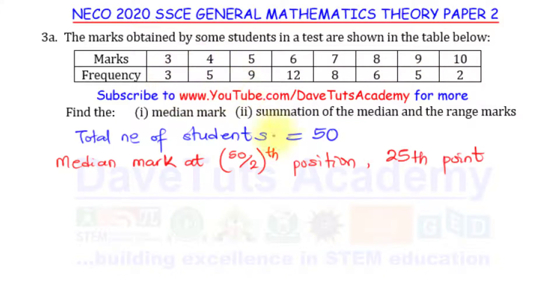Looking at these numbers, we want to add cumulatively so we'll get to 25. We can see 3 + 5 = 8, 8 + 9 = 17, so here we have 17. 17 + 12 = 29. So the 25th position is falling in this particular column.